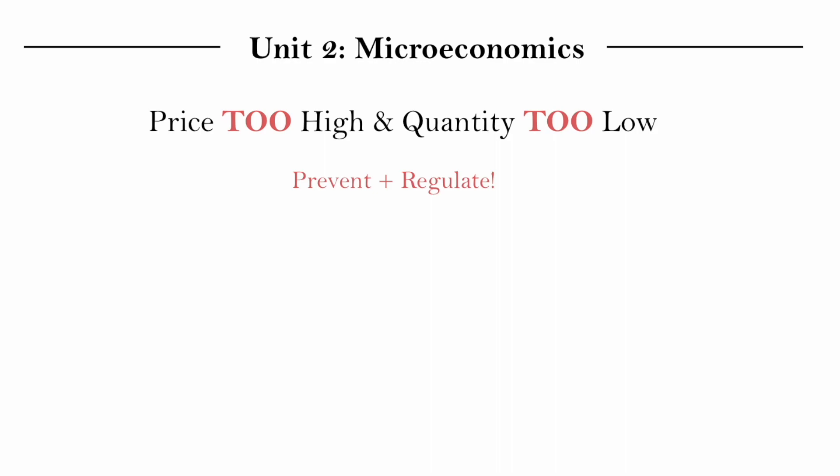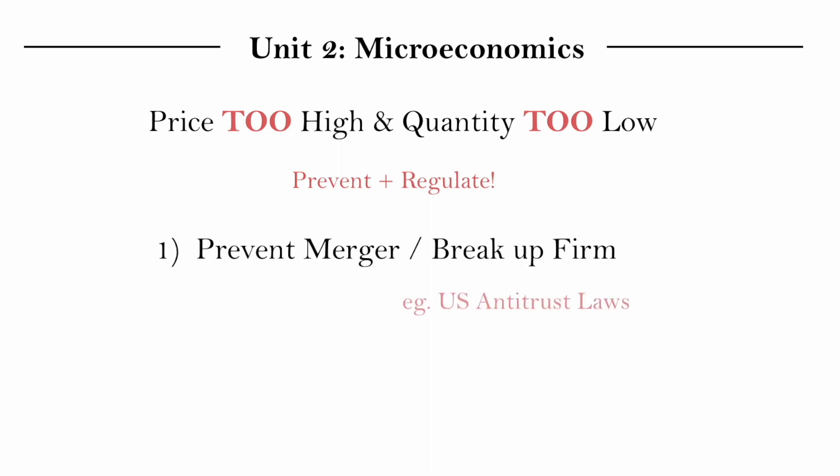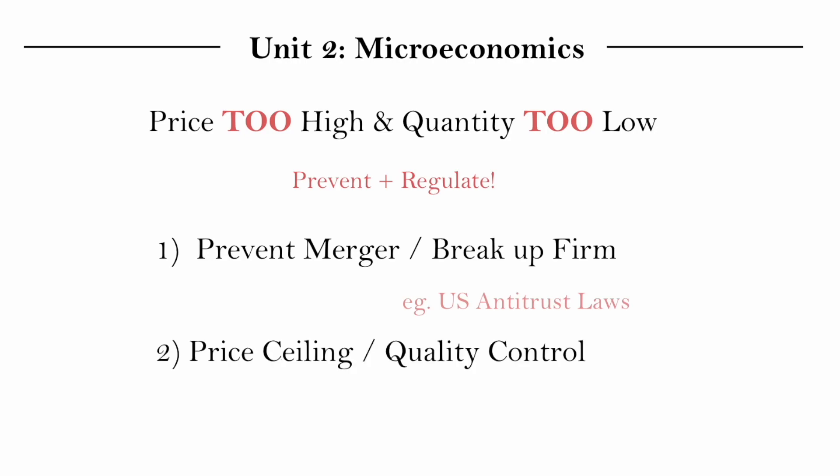To summarize, in order to regulate a monopoly where the price is too high and the quantity is too low, you can prevent mergers or break firms up — an example of how you would do this is through U.S. antitrust laws. Or the second measure: you could implement a price ceiling or quality control. Thus far, we have talked about why monopolies can be problematic and how we may address those problems. In the next video, we are going to talk about what are called natural monopolies — situations where, despite their limitations, it makes sense to have a monopoly.